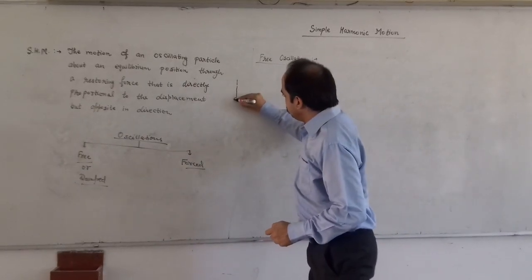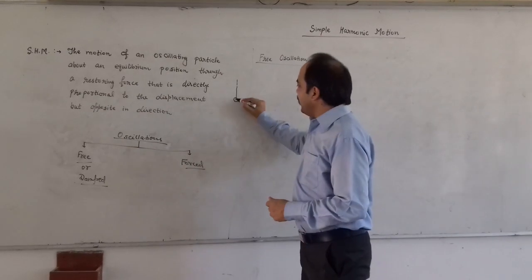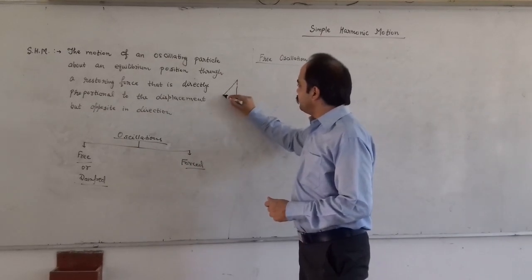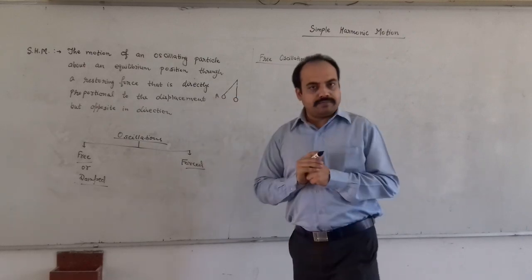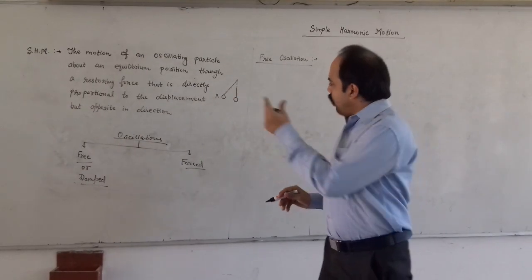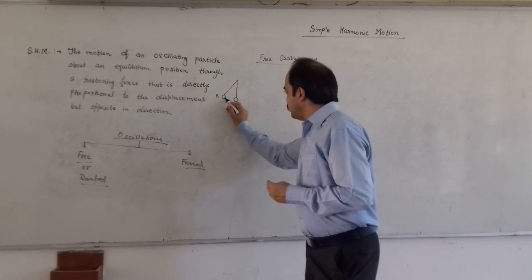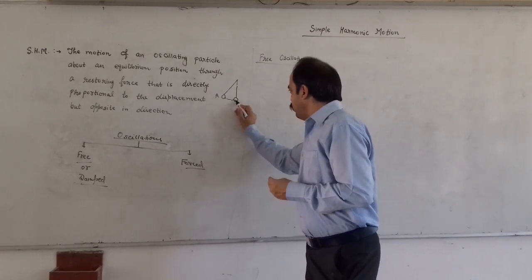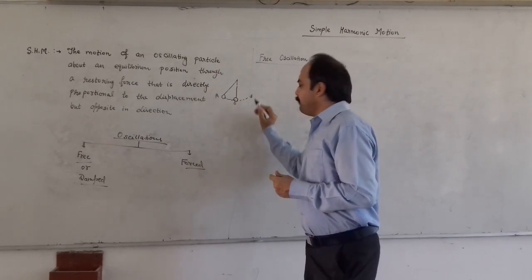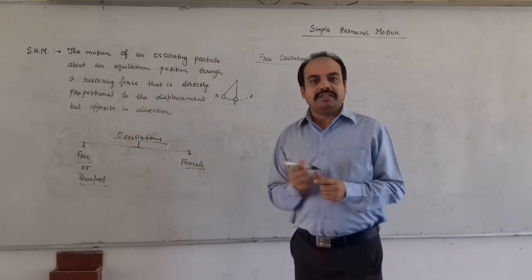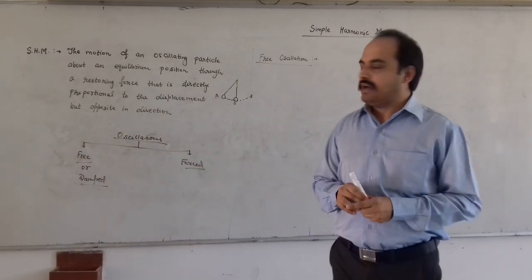Let this be a pendulum and this is the equilibrium point. Let it be displaced to point A and left. Then the bob will move along this direction from A to O and then O to B and repeat its motion. This type of motion is known as simple harmonic motion.